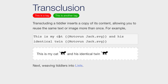Transcluding a tiddler inserts a copy of its content, allowing you to reuse the same text or image more than once. In this example, we're using the same picture of a cat stored in a tiddler called motovanjack.svg in two different places.